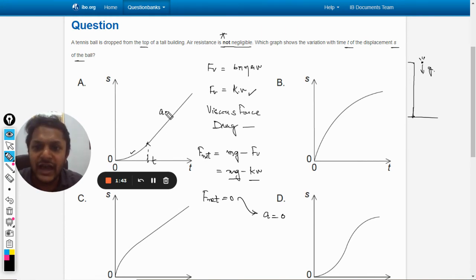Because now the acceleration is equal to zero and velocity is constant, so the displacement-time graph will be a straight line.